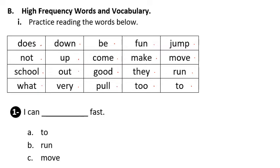Number one. I can blank fast. Is it A, to fast, or B, run fast, or C, move fast? The right answer is B. I can run fast.